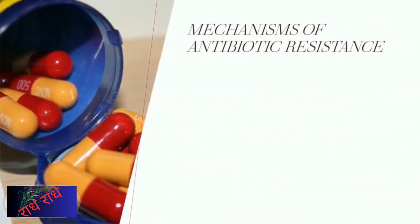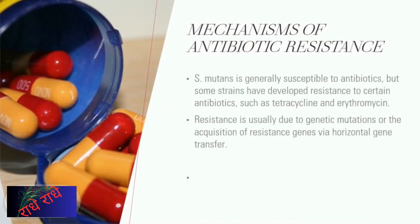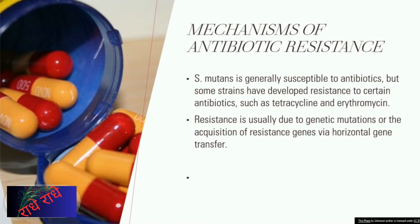S. mutans can exhibit resistance to certain antibiotics, like tetracycline and erythromycin, due to genetic mutations or the acquisition of resistance genes from other bacteria, known as horizontal gene transfer. This makes S. mutans difficult to treat as it can develop resistance to antibiotics.